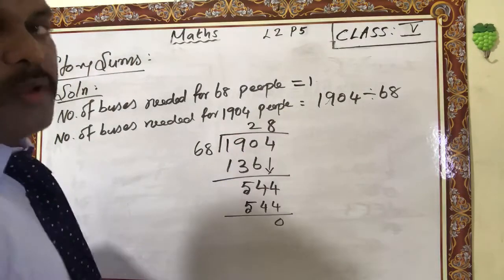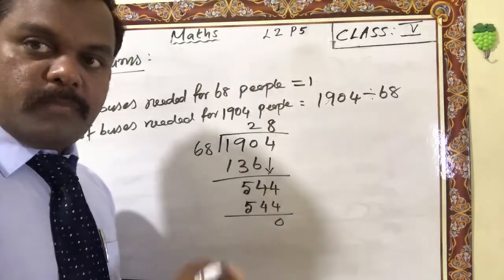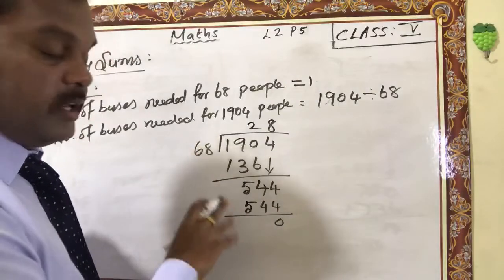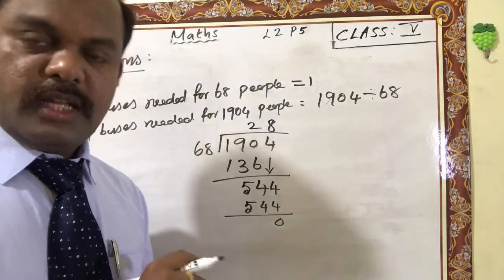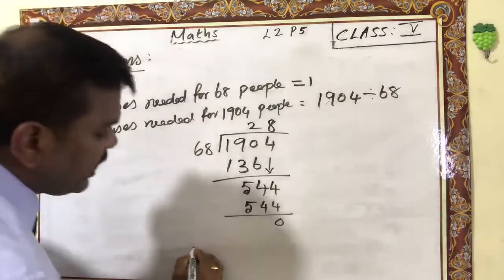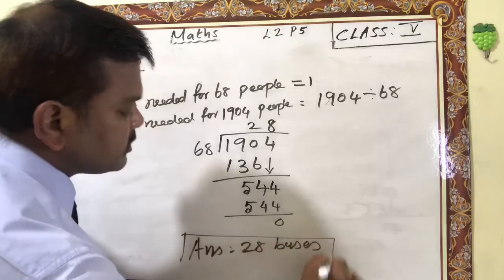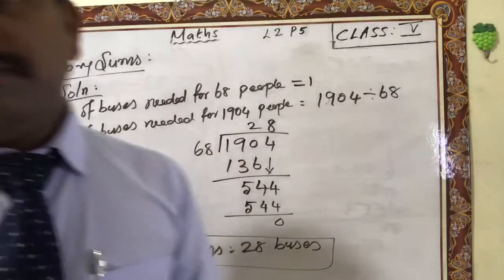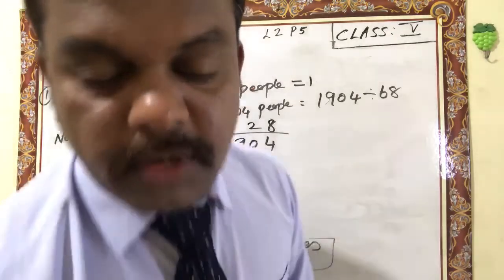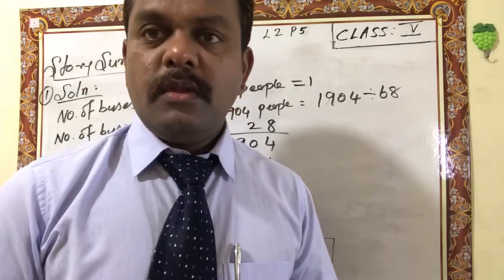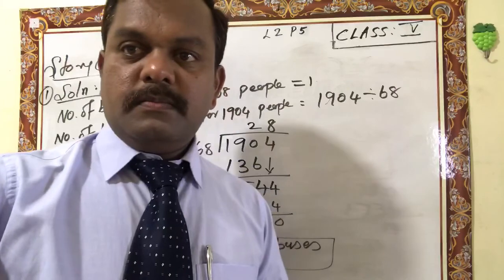Always, the quotient will be the answer. Don't write any remainder as the answer — sometimes remainder questions will come and I will explain that. So answer is equal to 28 buses. Thanks for watching this video. Thank you.